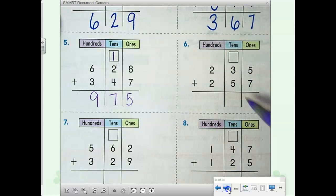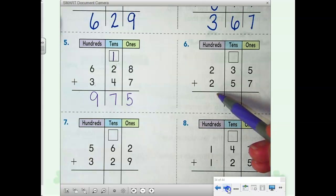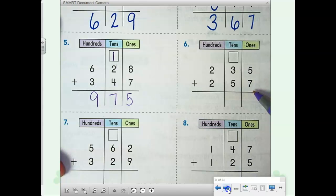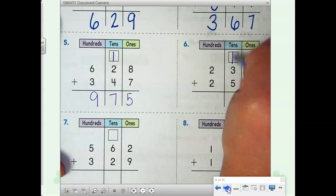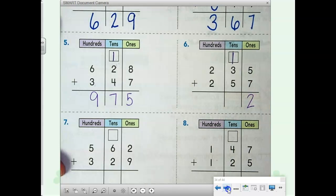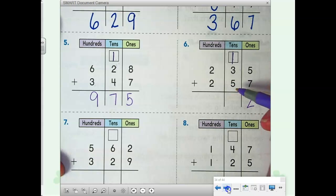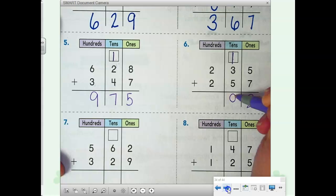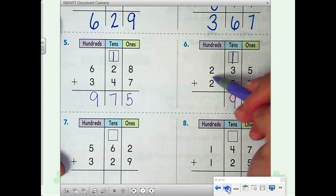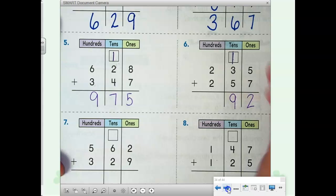Let's check number 6. 235 plus 257. Always start with our ones column. 5 plus 7 is 12. 12 is one 10 and two ones. We have three numbers to add in the tens column now. 1 plus 3 equals 4, 4 plus 5 is 9. Wow, we're getting close to having to regroup there, guys. And 2 plus 2 in the hundreds column, 4. 492.